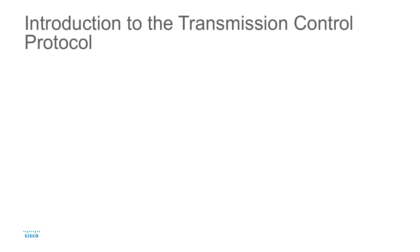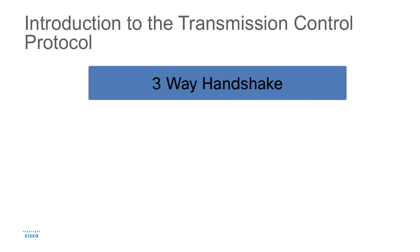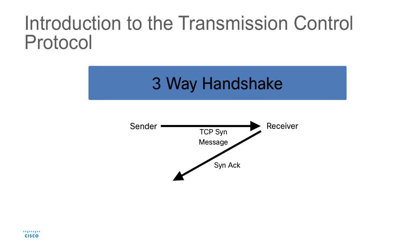When TCP establishes a session between two host devices, it goes through what's called a three-way handshake. The sender will send a TCP SYN message, and the receiver will acknowledge that by sending a SYN-ACK. Under normal circumstances, a final ACK is sent back from the sender towards the receiver, and we would have an established connection.